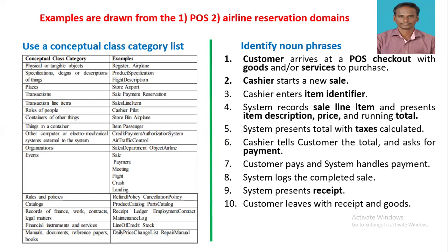The first conceptual class category is physical or tangible objects. For POS, it is register, and for the airline reservation domain, it is airplane. The second category is specification, design, or descriptions of things. For POS, it should be product specification, and for the airline reservation system, it should be flight description.